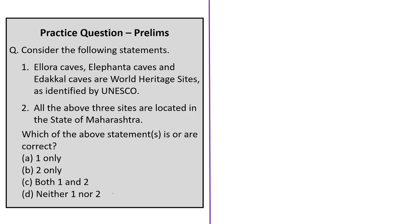The second question asks to consider two statements. The first statement says Ellora Caves, Elephanta Caves, and Edakal Caves are World Heritage Sites. This is incorrect — Ellora and Elephanta have been declared World Heritage Sites, but Edakal Caves have not; there is only a proposal to include them. The second statement says all three sites are in Maharashtra, which is also wrong — Edakal Caves are in Kerala, while Ellora, Elephanta, and Ajanta are in Maharashtra. The correct answer is option D: neither 1 nor 2.